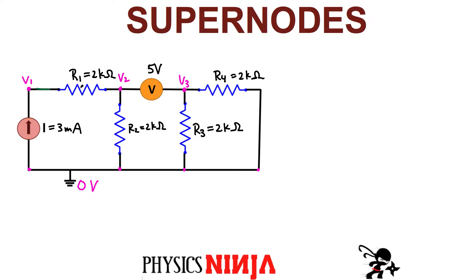The next thing you want to do for nodal analysis is pick a direction for the current. Even if I don't know, I just guess. I'm going to guess that there's a current flowing in this direction, and I'll guess there's a current flowing down. I didn't define the polarity of this potential difference, so let's put positive voltage on that side and negative on this side — the potential difference has to be 5 volts. I'll also define a direction of the current over here, and assume the current is flowing in this direction for the final branch.